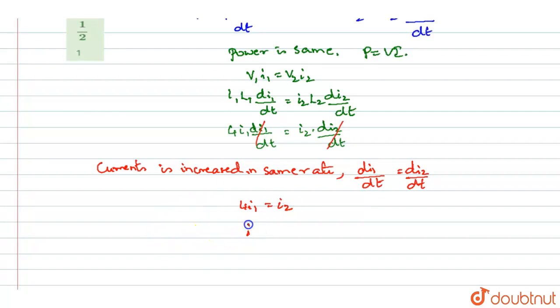Now we have to write the ratio of currents. I1 by I2 will be equal to 1 by 4. So this is the ratio of the currents I1 by I2. Option B will be the right answer.